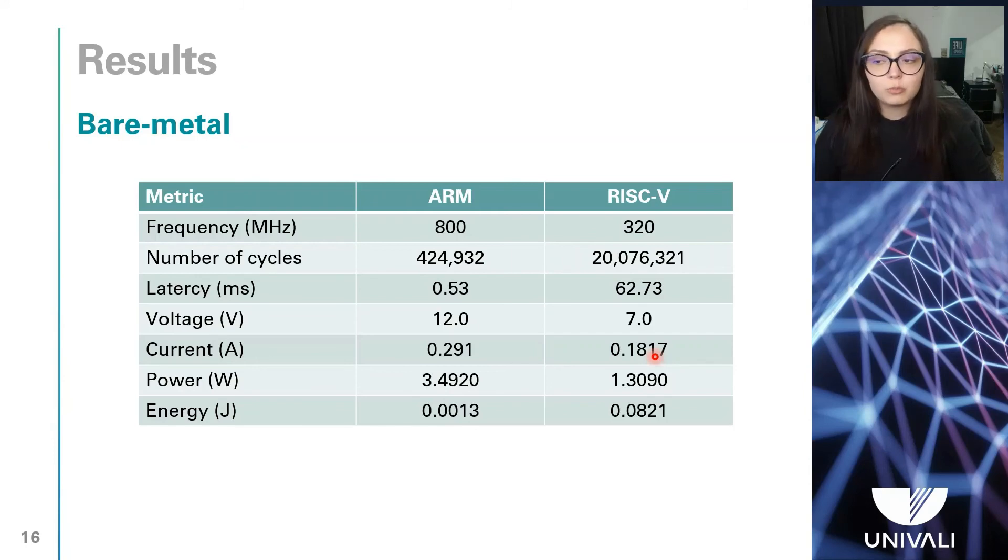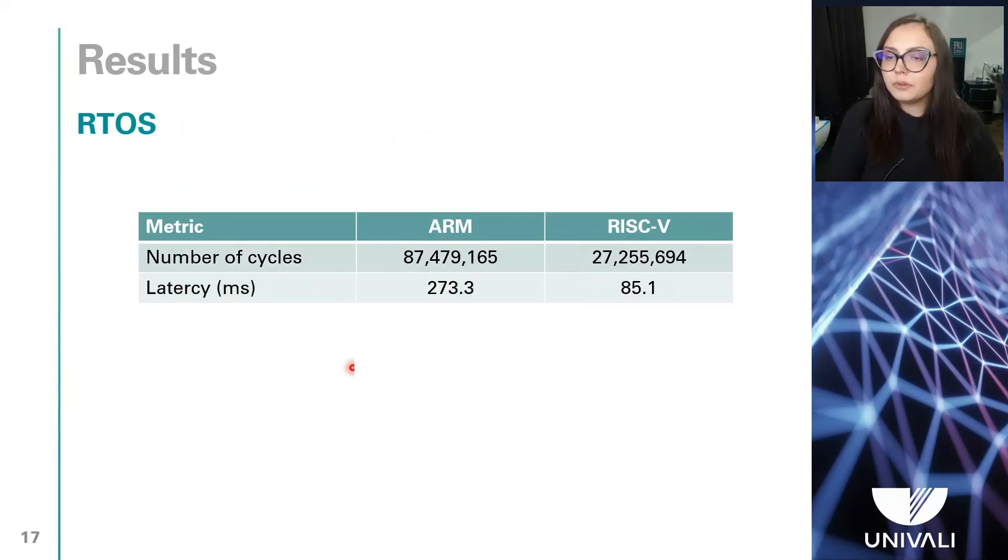This table presents the performance of RISC-V processor when running the CCSDS-123 compressor over the two real-time operating systems. We can notice that both RTOSs increase the processing latency, but the performance of the platform based on FreeRTOS is 3.2 times higher than that based on Zephyr RTOS.